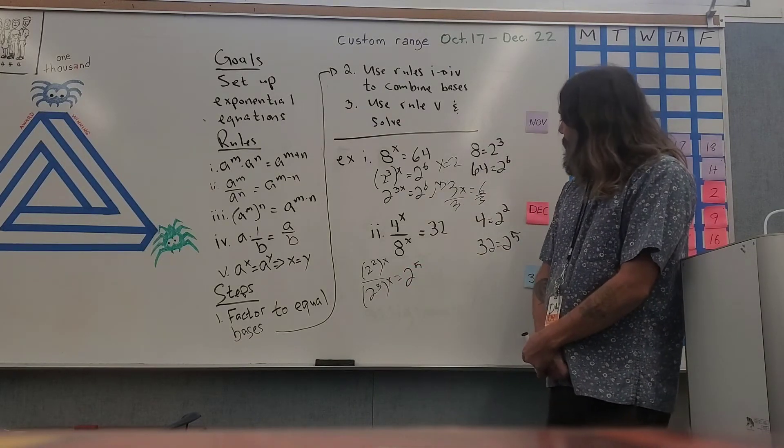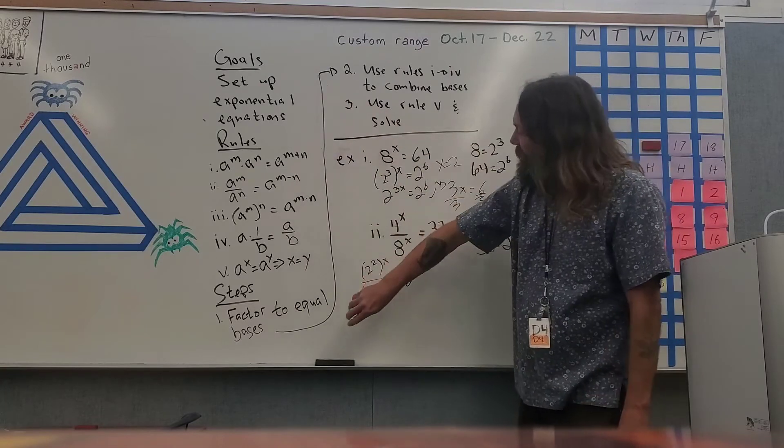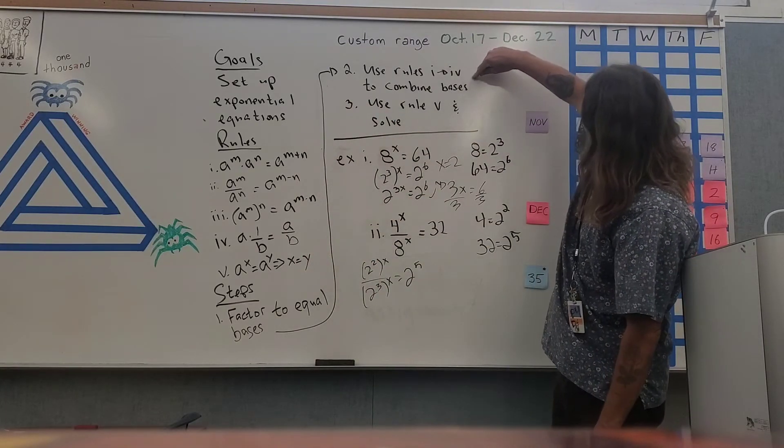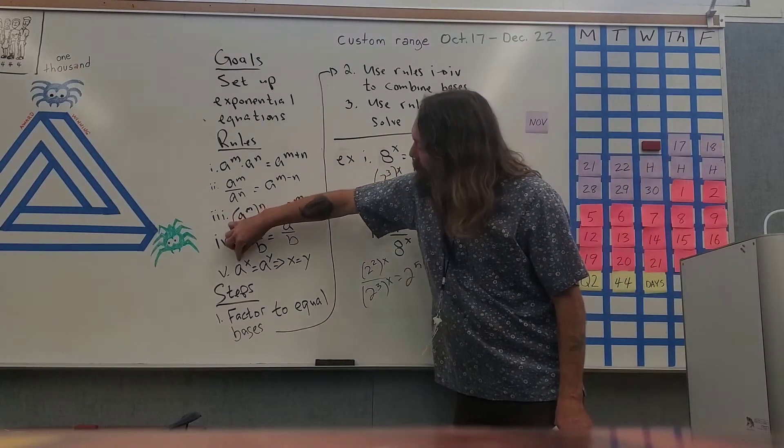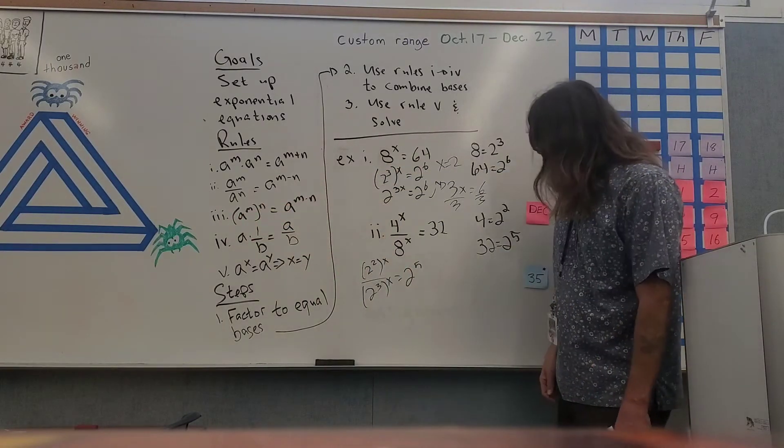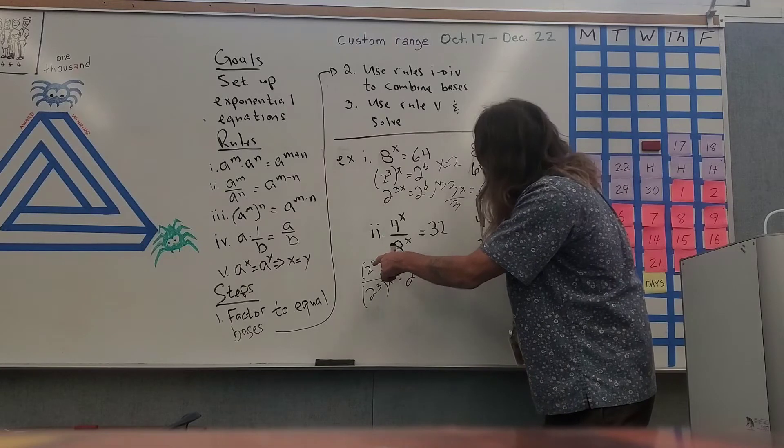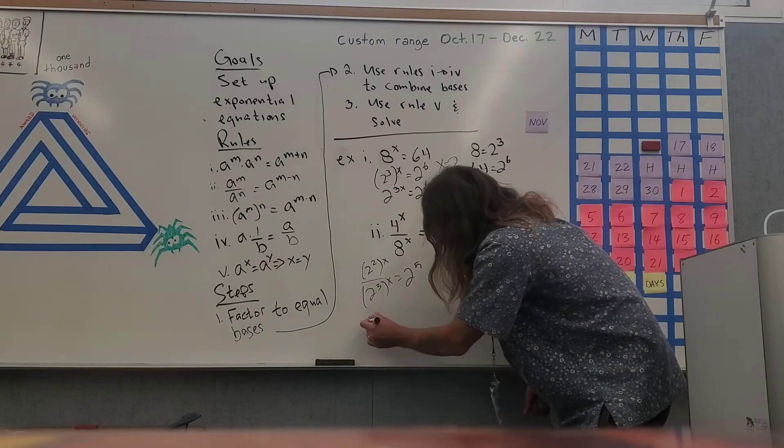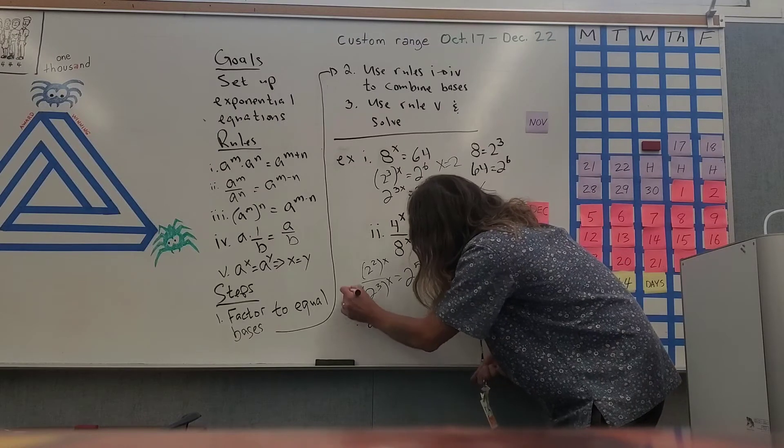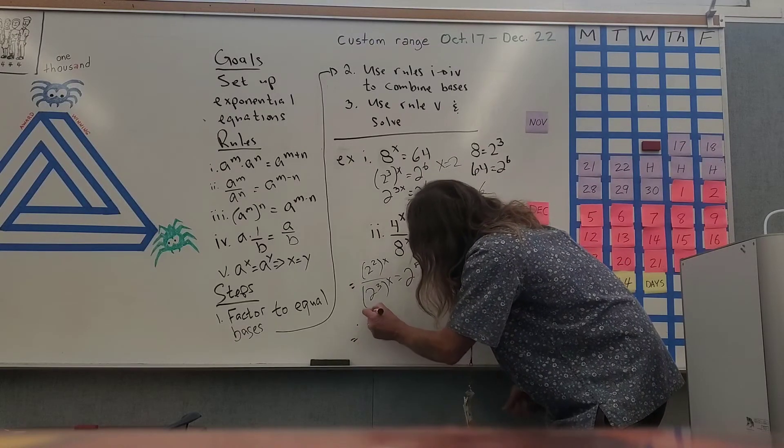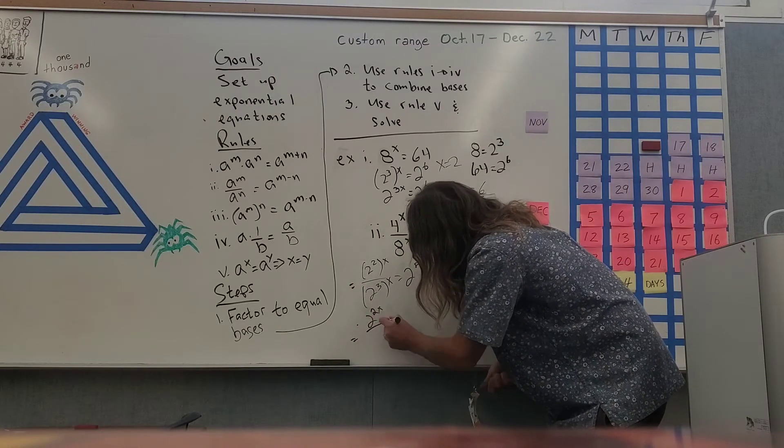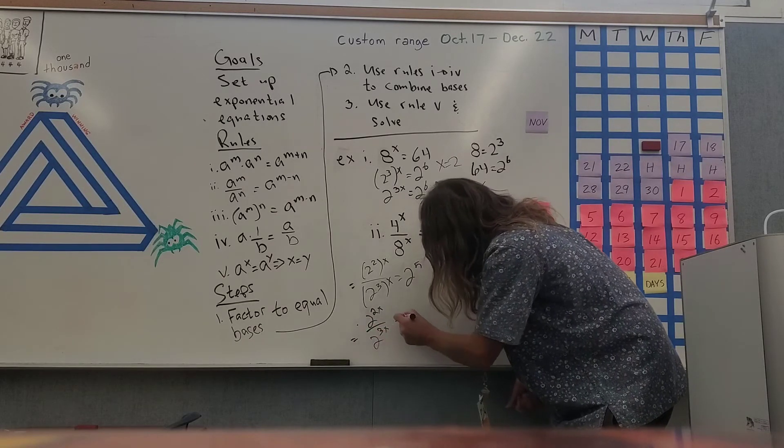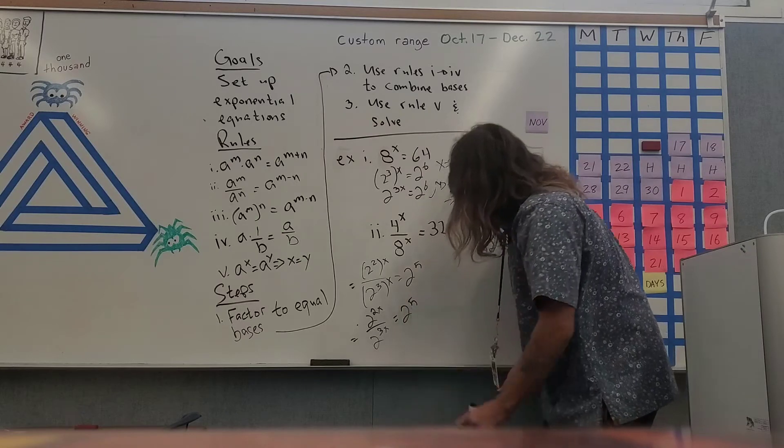Now remember, I've factored to equal bases. Now I need to use rules one through four to combine bases, because again, we only want one base on each side of this. So I'm going to use rule three twice, so now I get two to the power of two x divided by two to the power of three x, and that's equal to two to the fifth power.